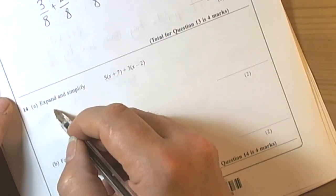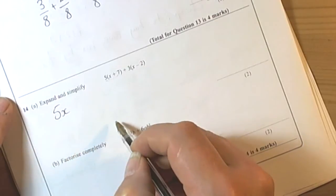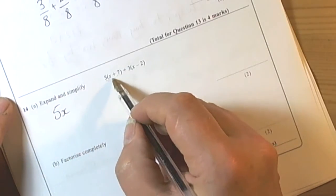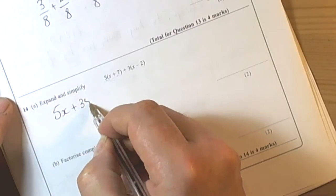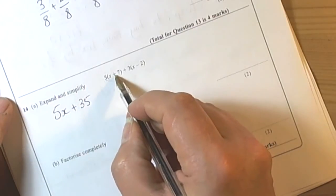So for this first bracket here we're doing 5 times x which is 5x, then we're doing 5 times 7 which is 35. We're plussing because there was a plus inside the bracket there.